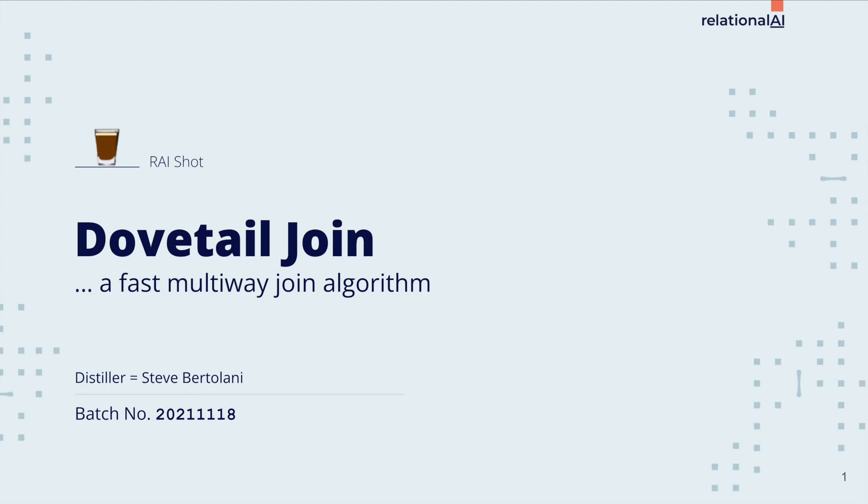Hi, my name is Steve, and welcome to this espresso shot about our dovetail join algorithm. At Relational AI, we have built the first relational knowledge graph management system. We believe that relational knowledge graphs are the foundation for data-centric applications. These are systems that learn, reason, and predict over richly connected data.